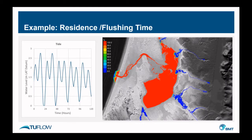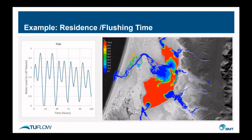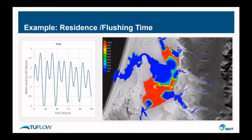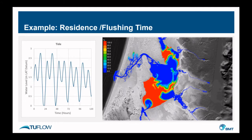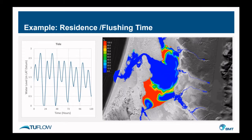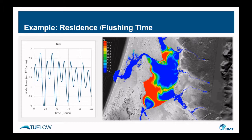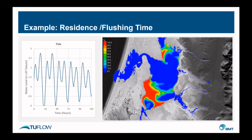This model here is a great example of a residence time assessment. The model has been established by defining an initial condition over the coastal and lake system, and that initial condition has been defined by setting the tracer concentration to 100. After that, the tributaries and also the ocean boundary have been defined as dynamic boundary conditions without any tracer applied, so a value of zero. The model is then just run for an extended period of time to see how long it takes to flush the coastal lake.